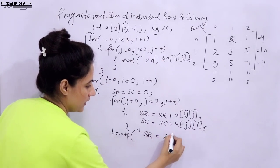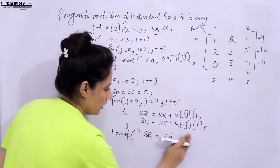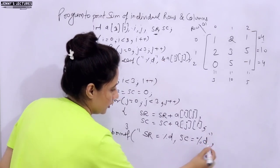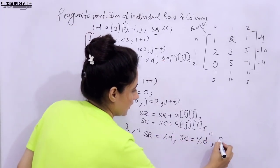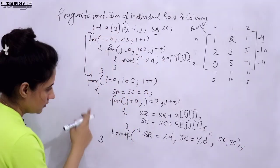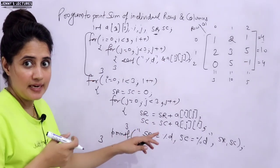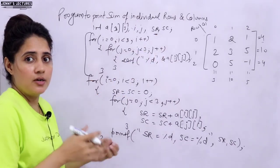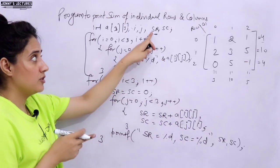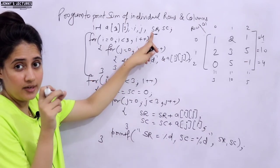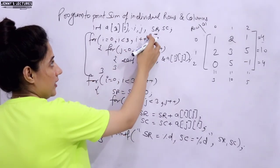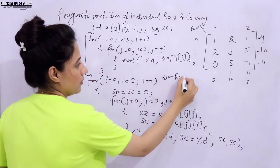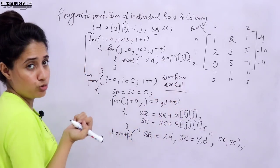After the inner loop, we print both sums: sum row SR = %d and sum column SC = %d in one line, printing both SR and SC. For variable naming convention, it's better to use lowercase letters — you can name them something like sumRow and sumColumn.